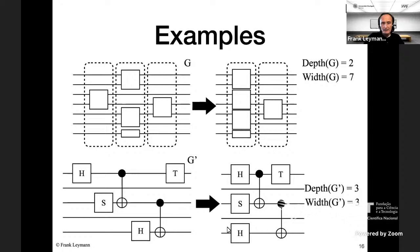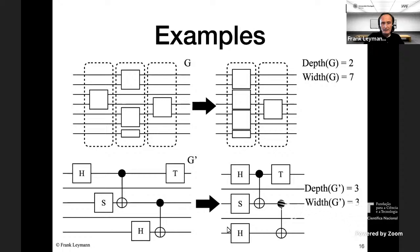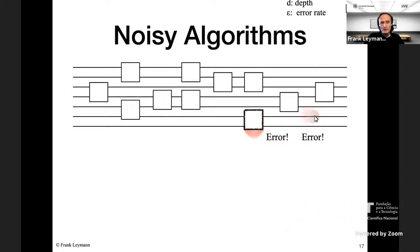For noisy intermediate-scale quantum algorithms, keep in mind both gates and qubits are error-prone. A rough estimation of the maximum size of a quantum algorithm that can be performed with only minor errors is: width times depth must be significantly less than one divided by the error rate (epsilon) of the machine.